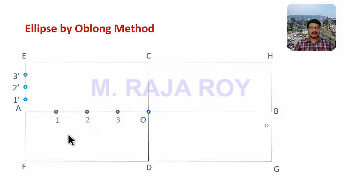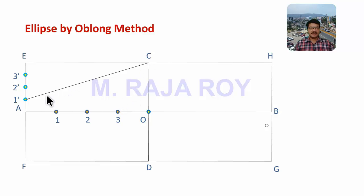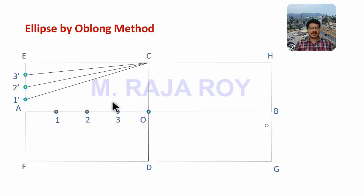Give the numbering 1, 2, 3 — assuming point A as the origin. From origin you will get 1 dash, 2 dash, 3 dash on AE, and 1, 2, 3 on AO. Then draw lines joining C to 1 dash, C to 2 dash, and C to 3 dash — that is, draw 3 lines like this.